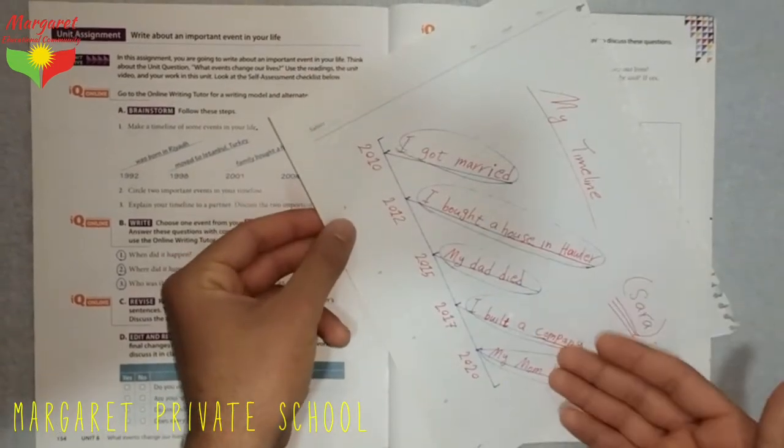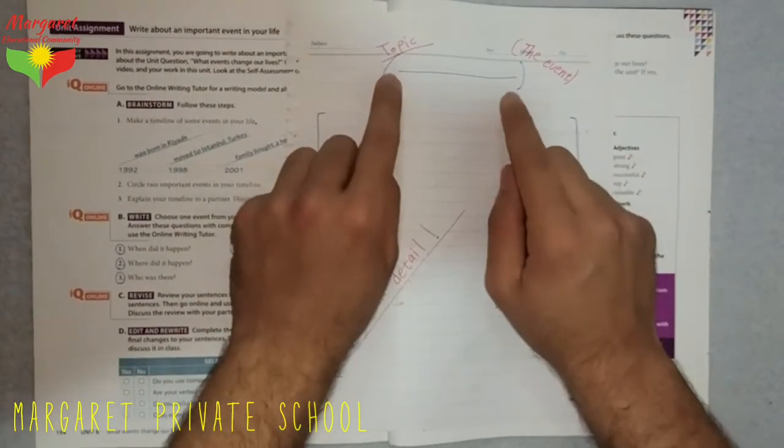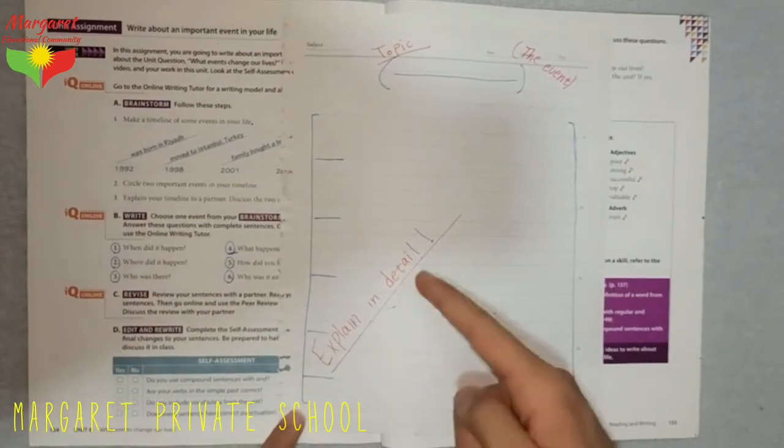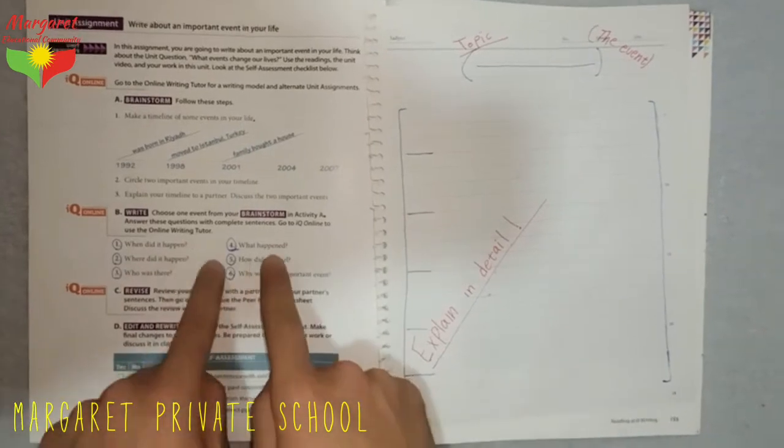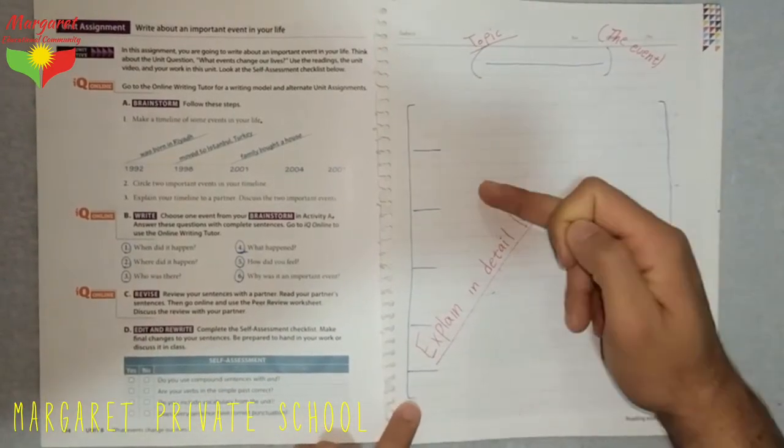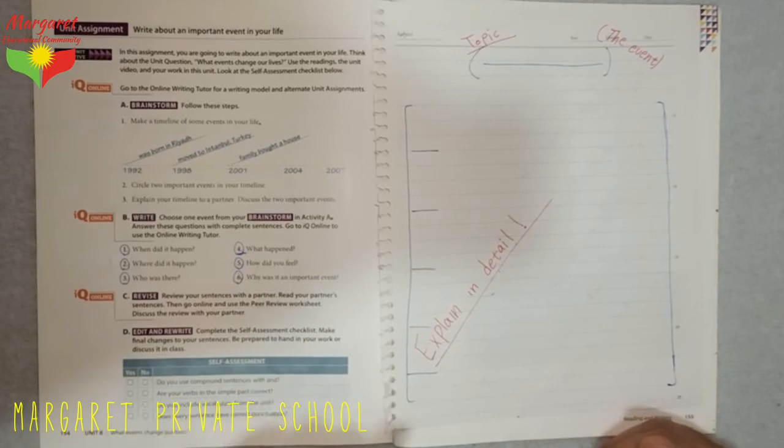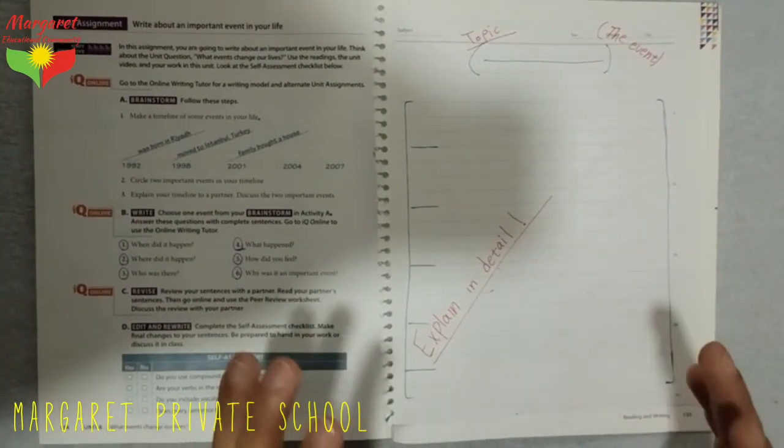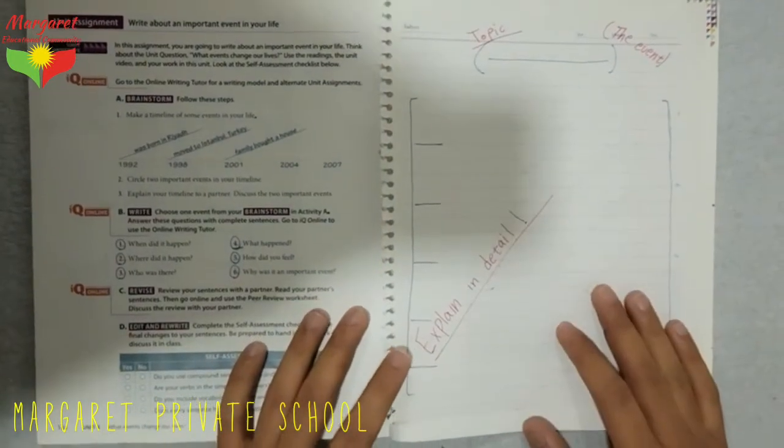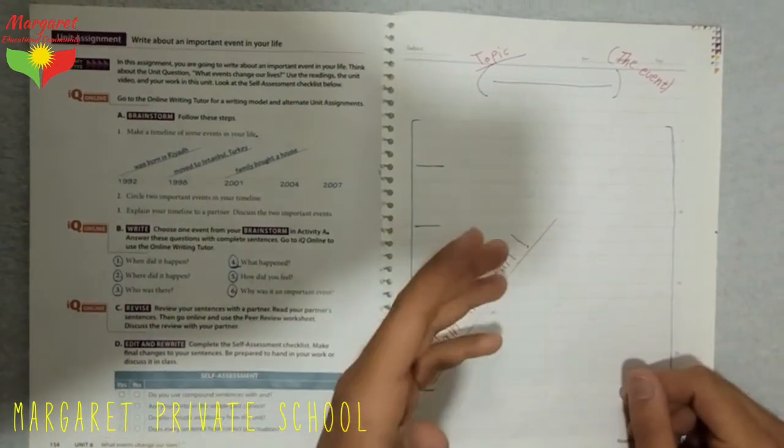Once you're done with the timeline, the last thing you do, you come to write your paragraph. You choose the event, and you write the name of the event here, at the top. Then, when you come down, you explain in detail. I mean, you take the answers of these questions, and you write them down here, one after another, so write the answer of number one, the first question here, number two, number three, number four, number five, until the end. Try to give it as much detail as you can, so your reader, for example I, when I read it, I understand why this event is important for you, and you can make people understand this event. Why is this an important event in your life?